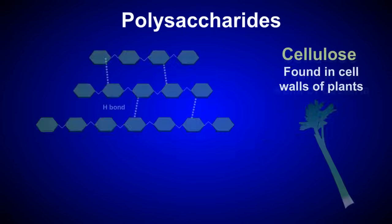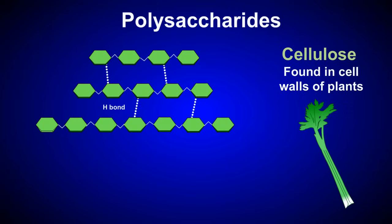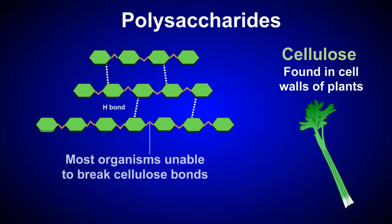The most abundant polysaccharide is cellulose. Cellulose is a straight-chain polymer of glucose, like amylose, but it differs in the configuration of the bonds between the glucose units. Most organisms are unable to break these bonds and cannot use cellulose as a source of energy. Instead, cellulose is used to add strength to plant cell walls.